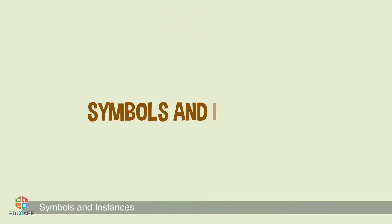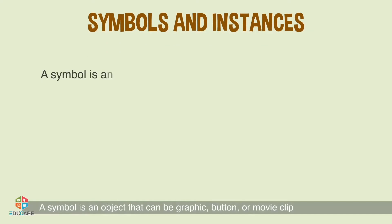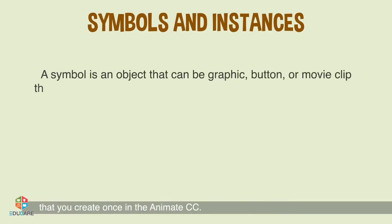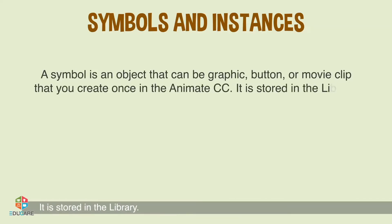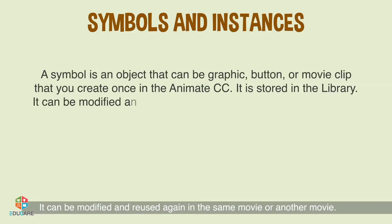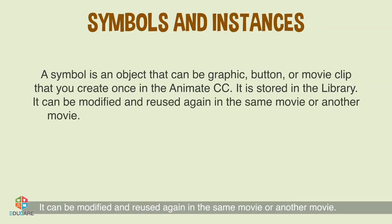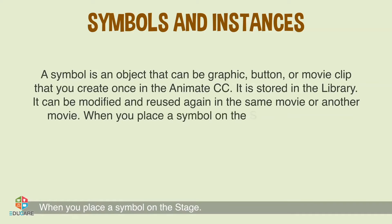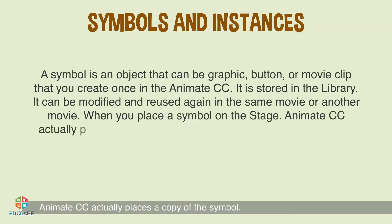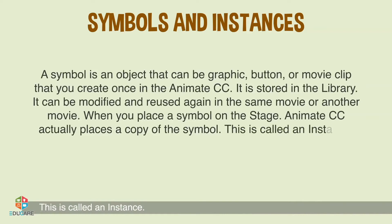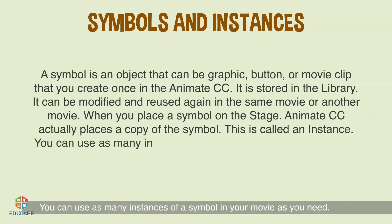Symbols and Instances: A symbol is an object that can be a graphic, button, or movie clip that you create once in Animate CC. It is stored in the library and can be modified and reused in the same movie or another movie. When you place a symbol on the stage, Animate CC actually places a copy of the symbol. This is called an instance. You can use as many instances of a symbol in your movie as you need.